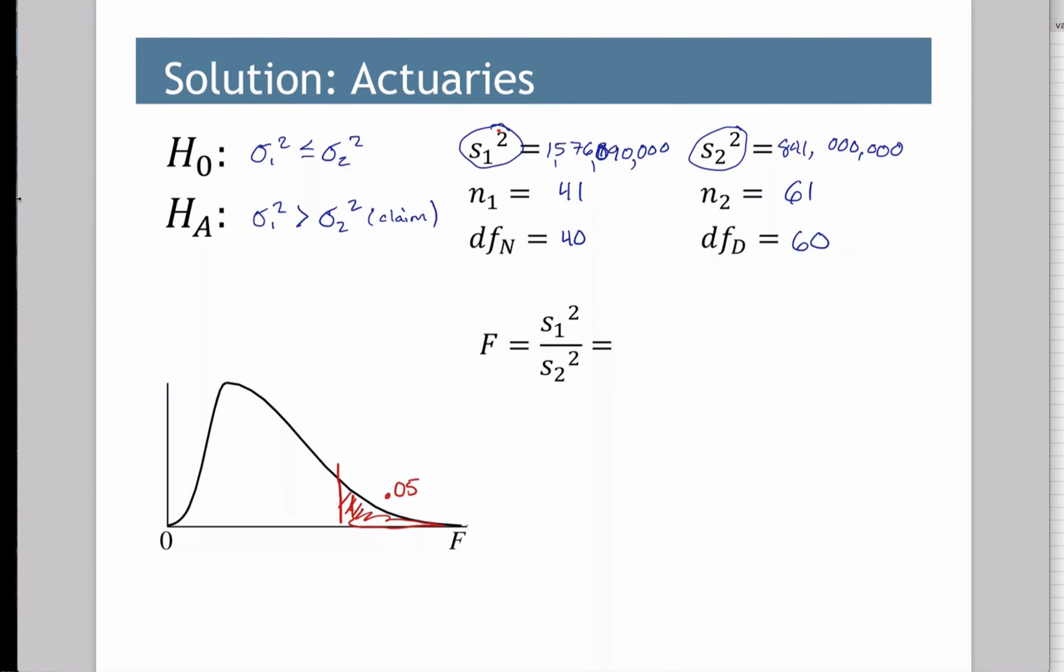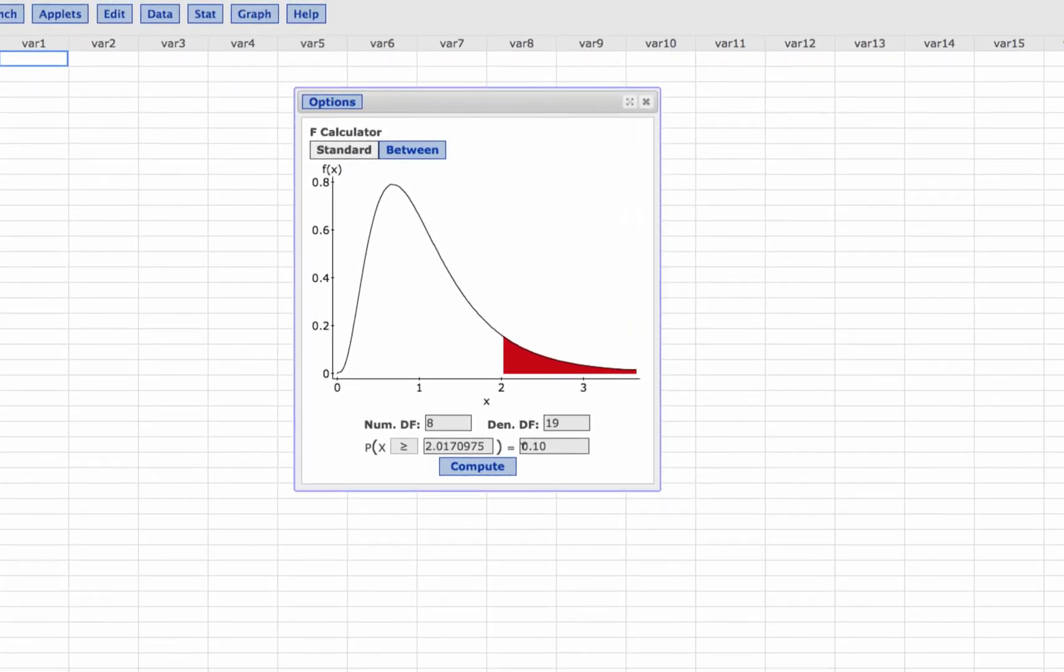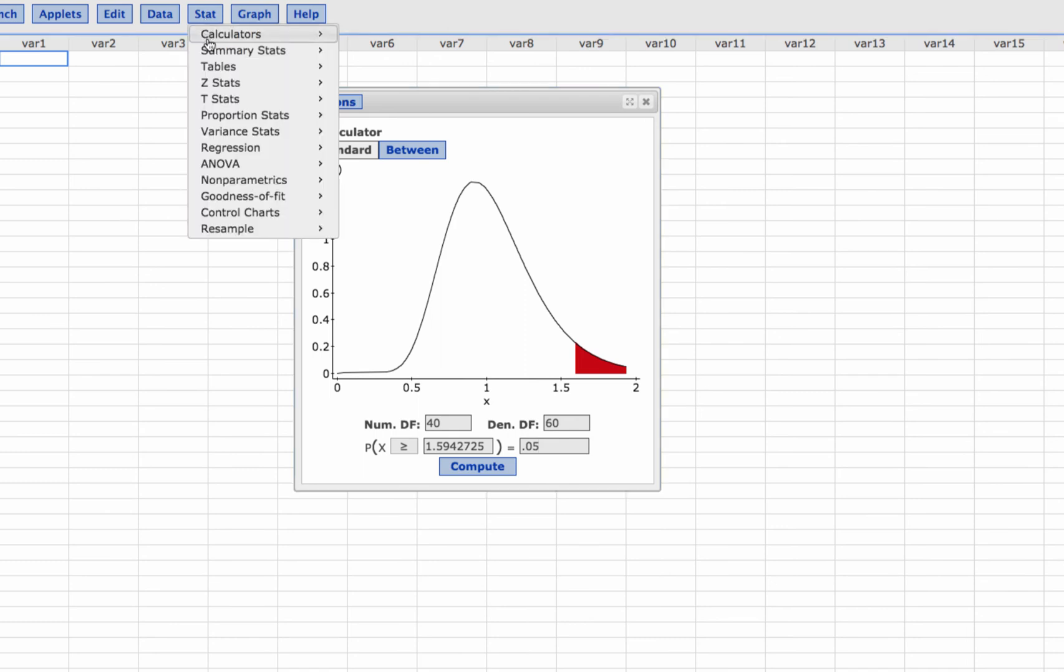So let's do this one in StatCrunch. So if I go into StatCrunch, first of all, let's get my critical value. So degrees of freedom was 40. And this one was 60. And 0.05. So 1.594. So I'll write that on my sheet, 1.594. That's the critical value. And then now, let's do stats, variant stats.